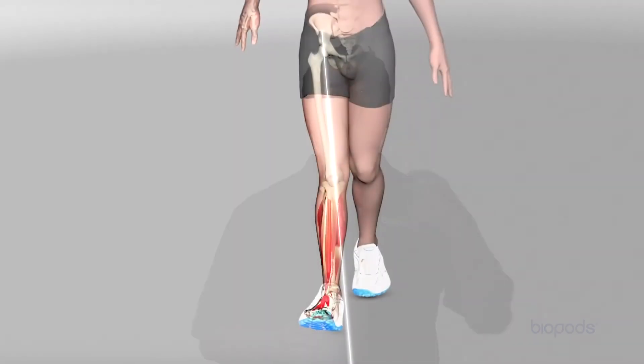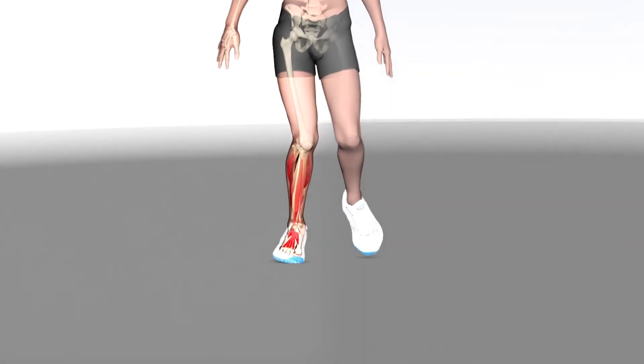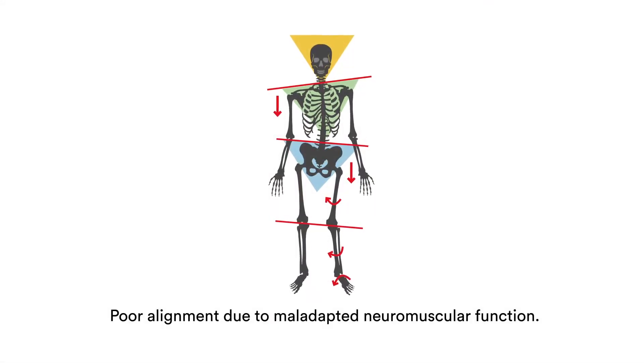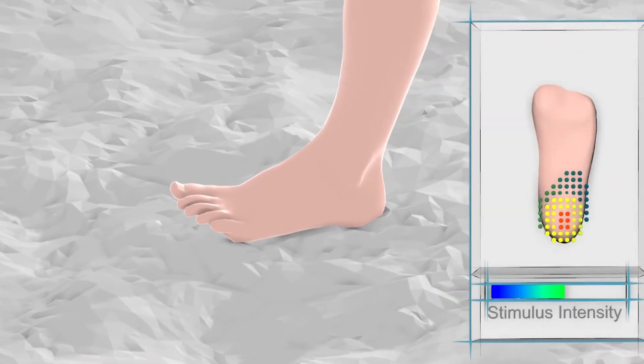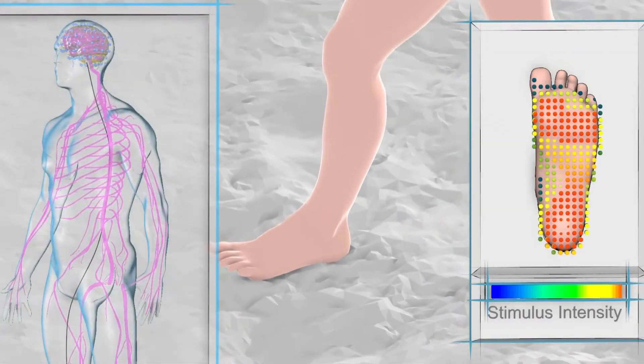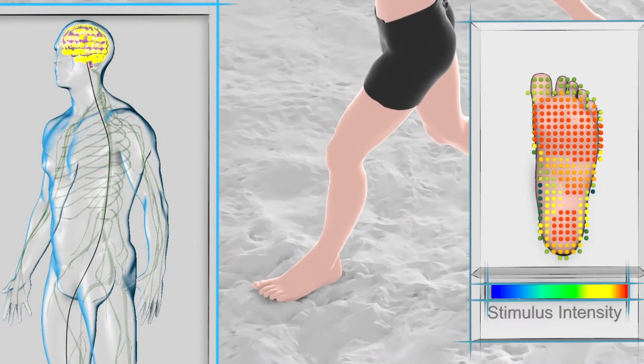What causes overpronation? Overpronation is caused by poor or maladapted neuromuscular function that has been conditioned by footwear use. Many consider overpronation to be the cause of most foot-related issues. Some healthcare professionals even believe that overpronation is a permanent condition. In most cases, overpronation is neither genetic nor permanent. For proper function, our feet require right stimulus and the right movement. Right stimulus consists of the subtle varied stimulus that the soles of our feet receive when we walk, especially when we walk barefoot on natural terrain.